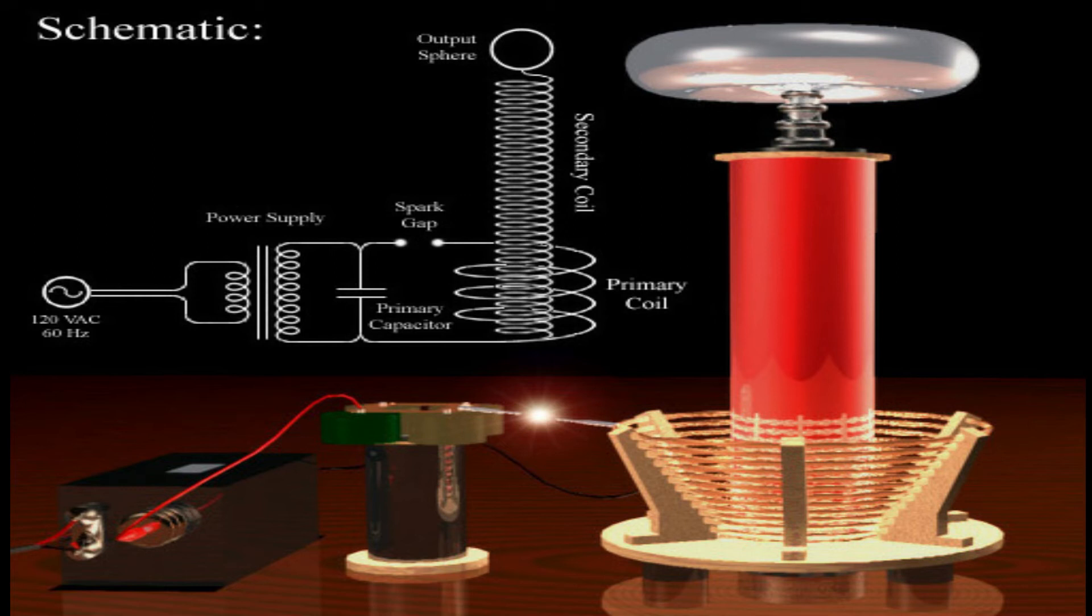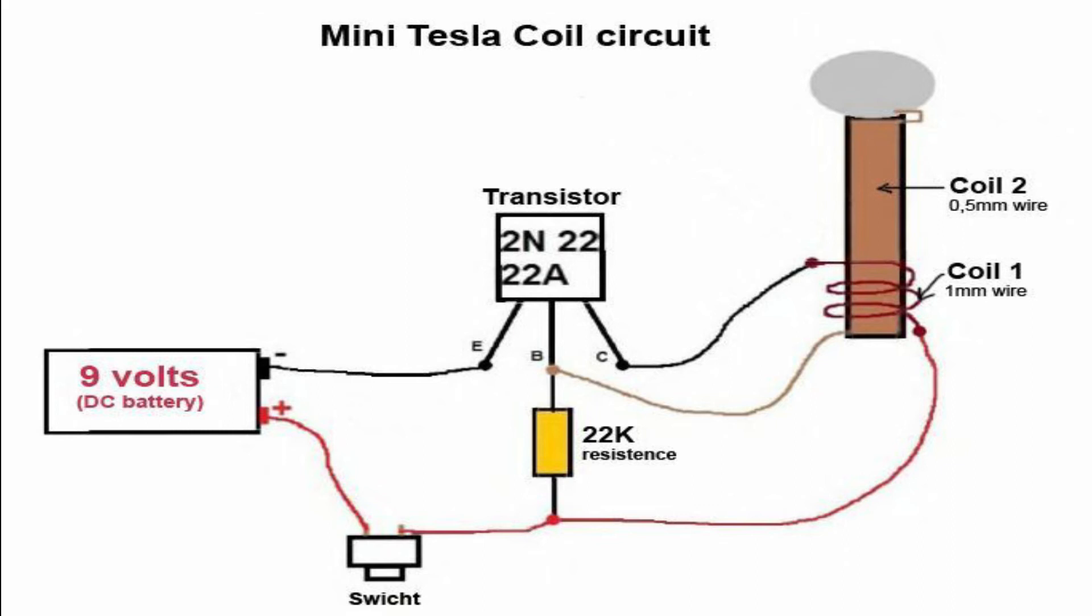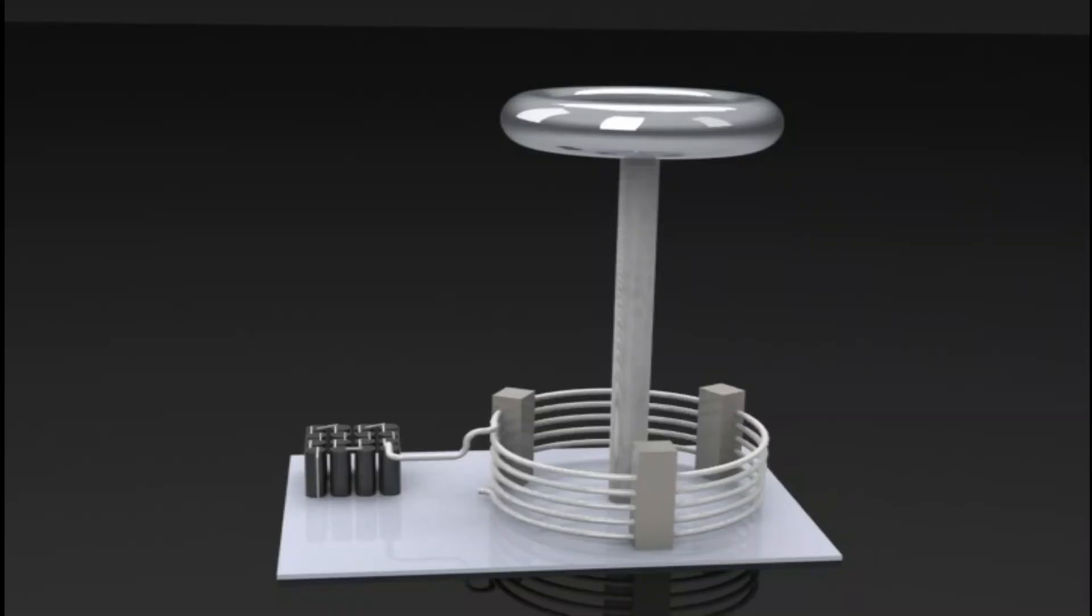The principle behind the Tesla coil is to achieve a phenomenon called resonance. This happens when the primary coil shoots the current into the secondary coil at just the right time to maximize the energy transferred into the secondary coil. Think of it as timing when to push someone on a swing in order to make it go as high as possible.